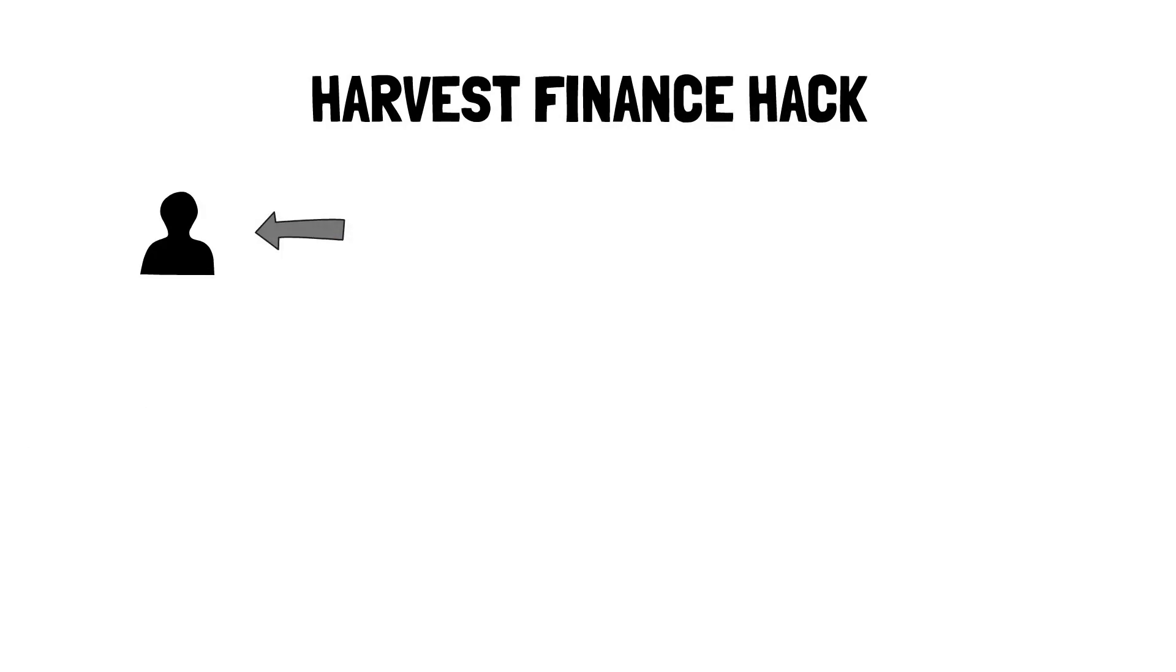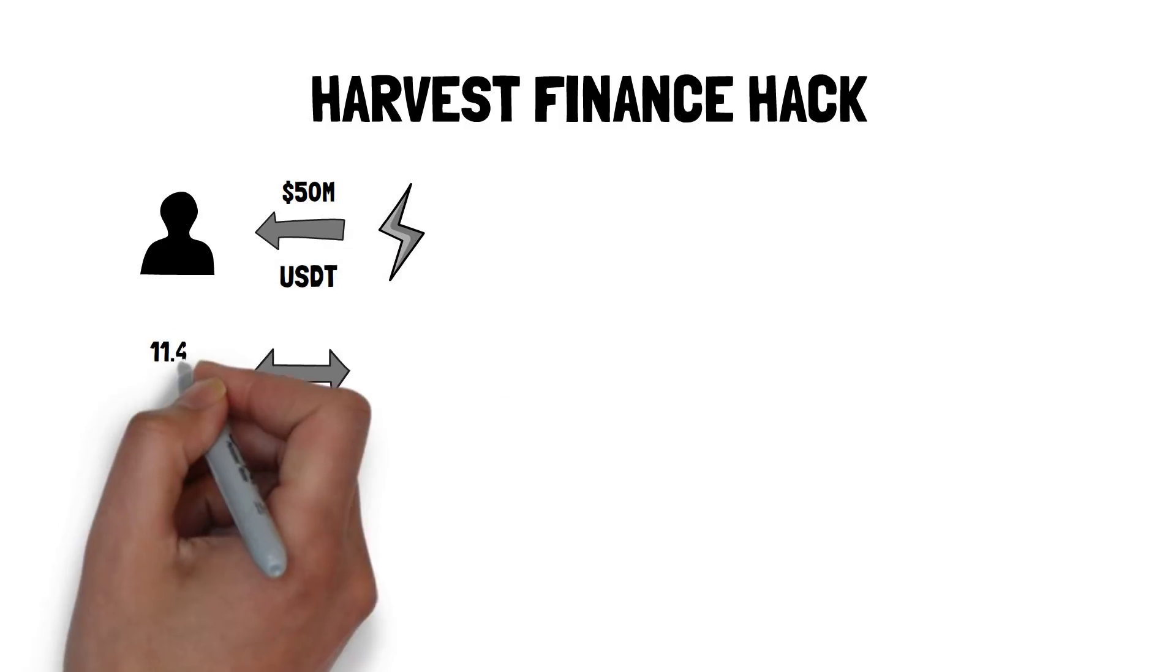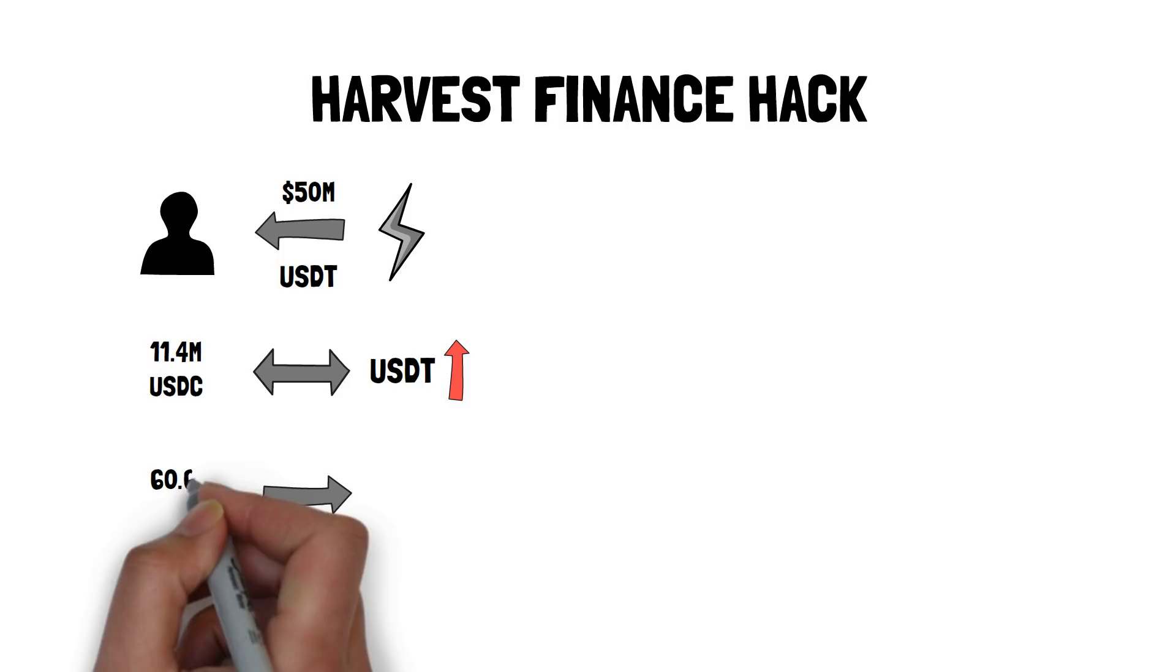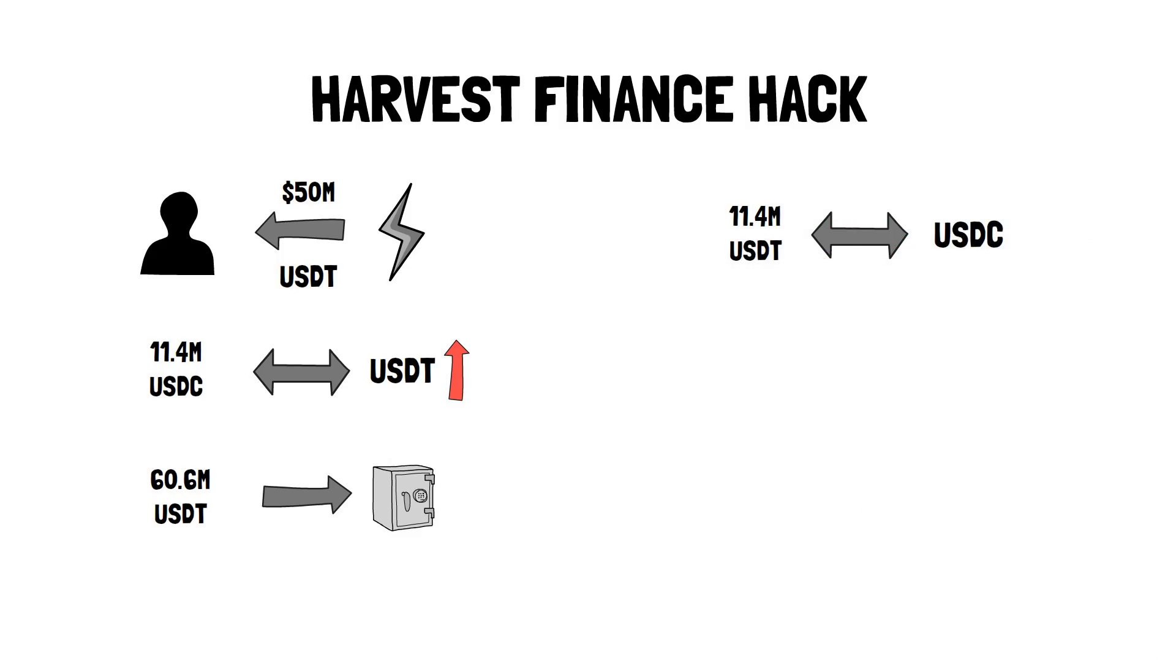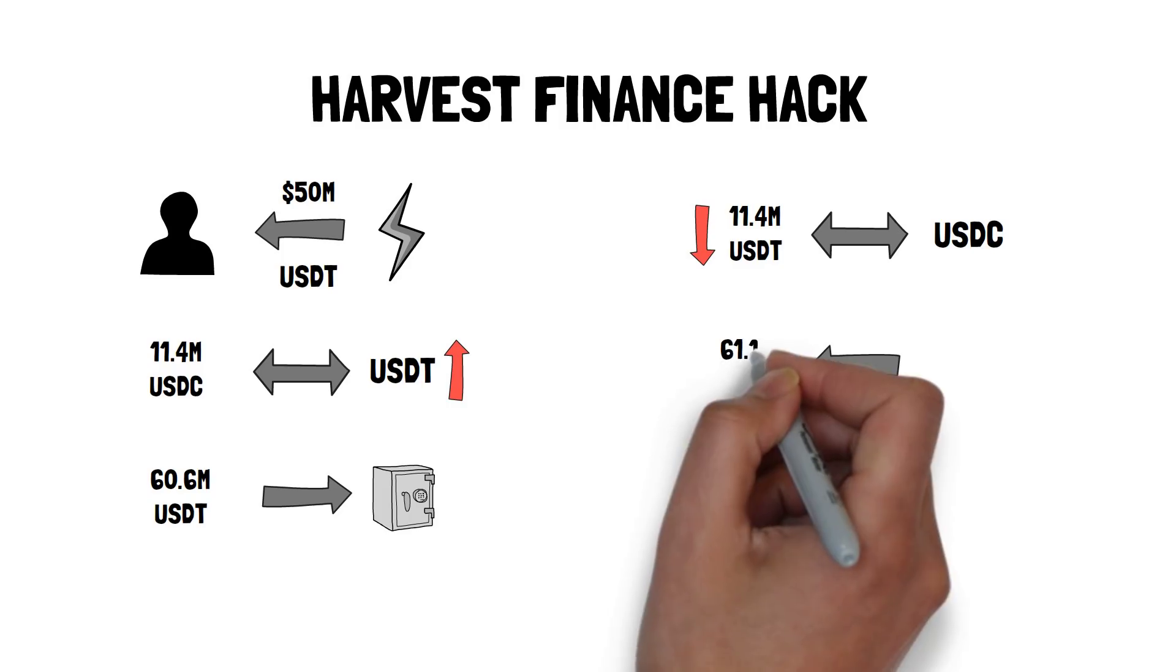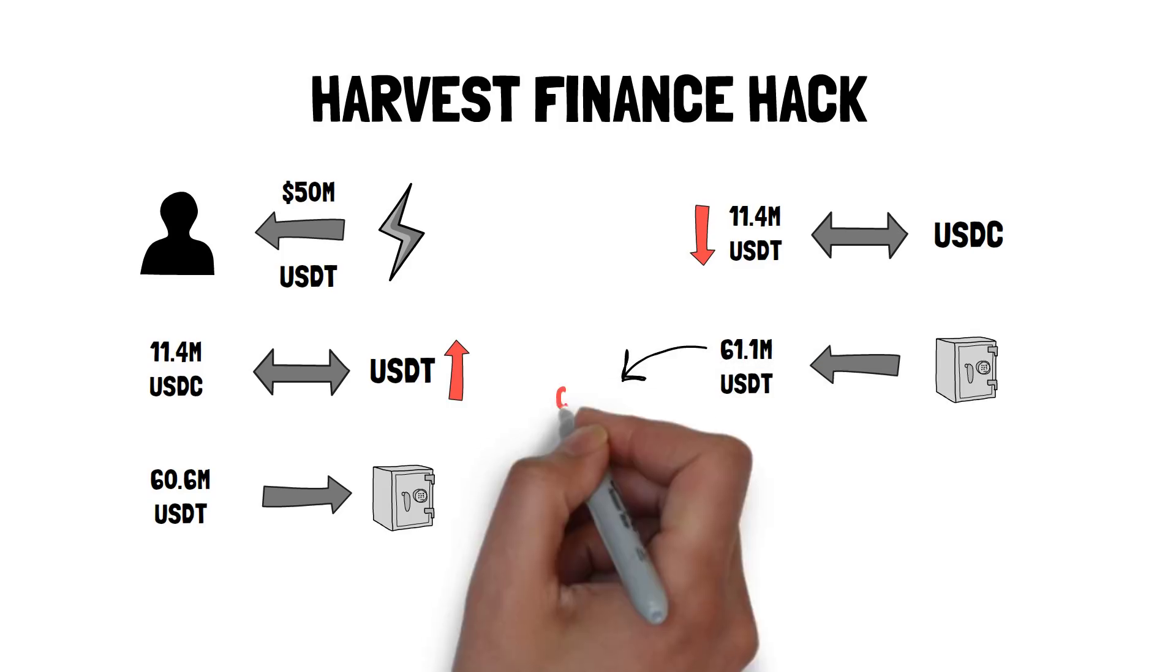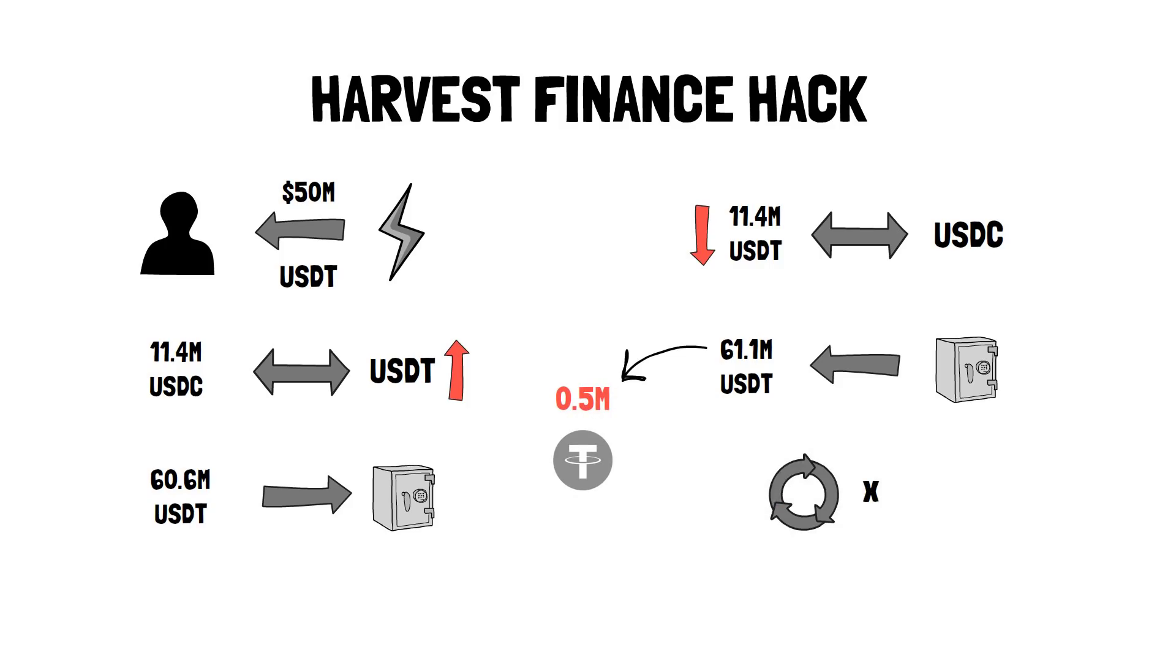The following actions took place in a 7-minute time period. Take a $50 million USDT flash loan. Swap $11.4 million USDC to USDT, causing USDT price to go up. Deposit $60.6 million USDT into Volt. Exchange $11.4 million USDT to USDC. Withdraw $61.1 million USDT from Volt, resulting in half a million USDT profit. Rinse and repeat 32 times without any prior testing.